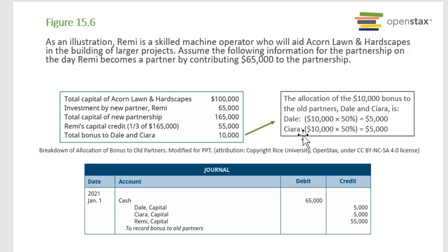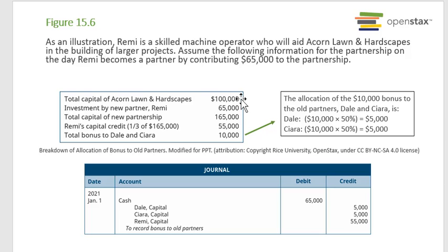Dale and Sierra each get 50% of the $10,000 bonus — $5,000 each. In the journal entry, Cash comes in at $65,000, Dale Capital is credited $5,000, Sierra Capital is credited $5,000, and Remy Capital is credited $55,000. Remy doesn't simply receive the full $65,000 as capital because that would give her more of the business than the two previous owners. You go through the process: determine existing capital, add the new partner's investment, find total capital, then divide by partners.